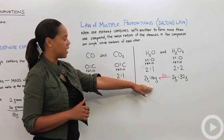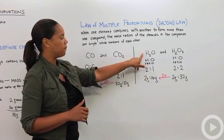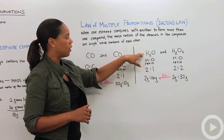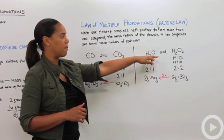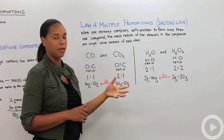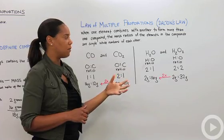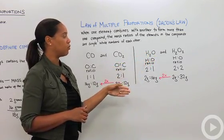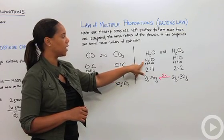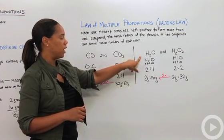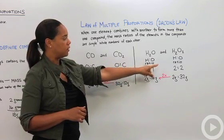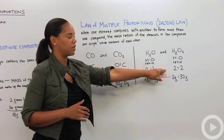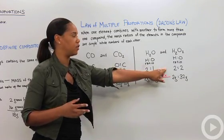We can apply the same logic to the difference between water and hydrogen peroxide, H2O2. Water and hydrogen peroxide are both composed of the same elements: hydrogen and oxygen in water and hydrogen and oxygen in hydrogen peroxide. Let's look at the hydrogen to oxygen ratio in water, which is two to one. In peroxide, it's two to two, or you could say one to one. But for these purposes, it's just a little bit easier to think of it as two to two.